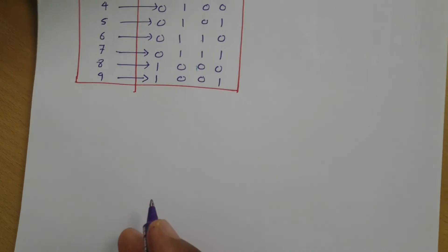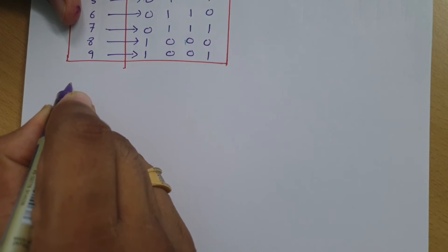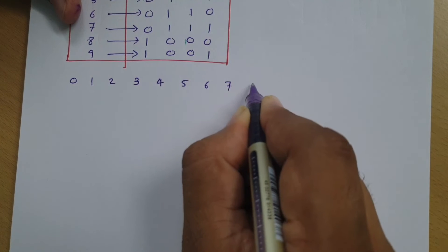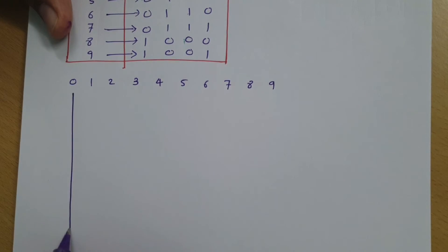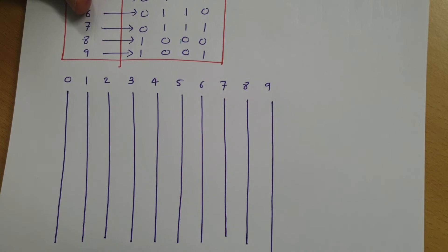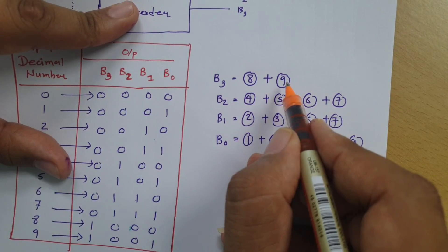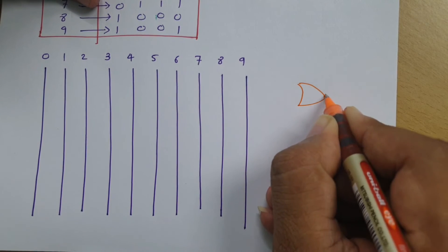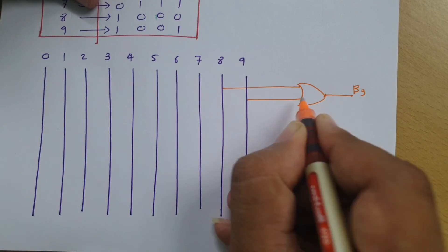To make the circuit, I will connect the input terminals: 0, 1, 2, 3, 4, 5, 6, 7, 8, 9. To get B3, since B3 equals 8 OR 9, we need an OR gate. Connecting terminals 8 and 9 through an OR gate gives us B3.